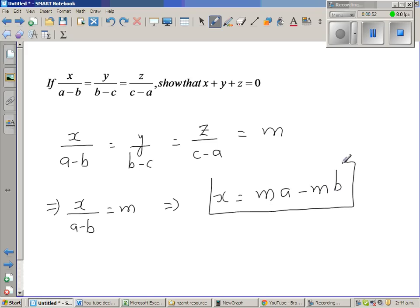Now the same way I can say y over b minus c is also m, which implies y is m b minus m c.